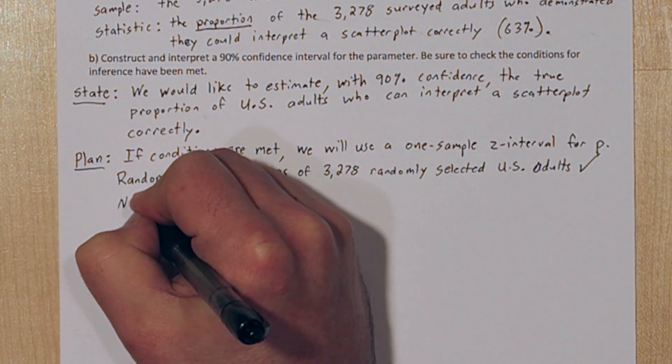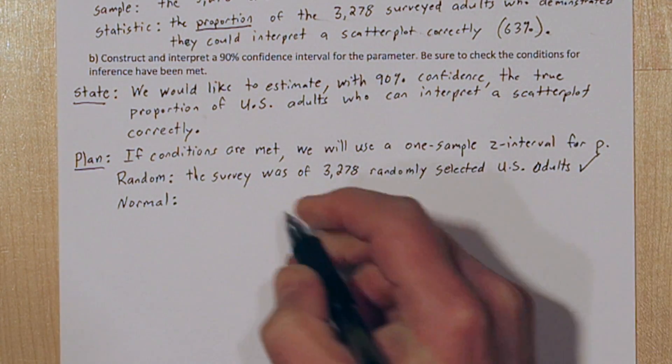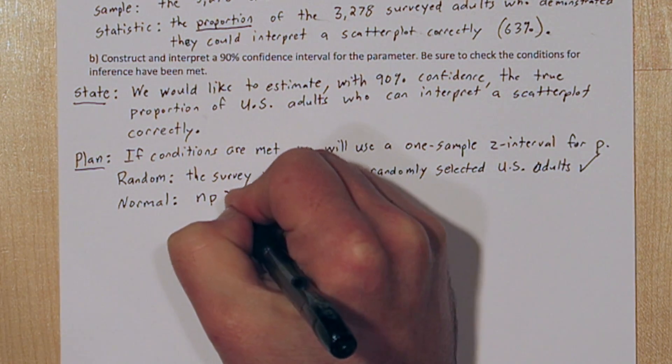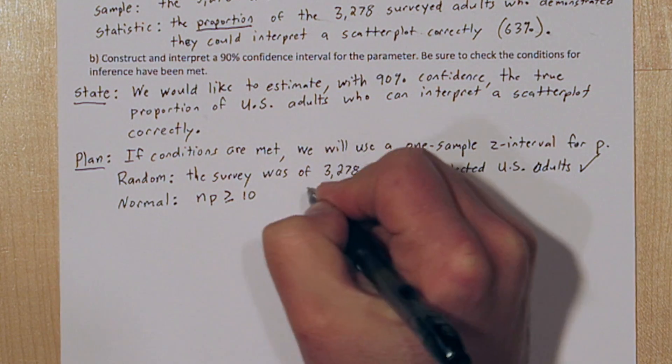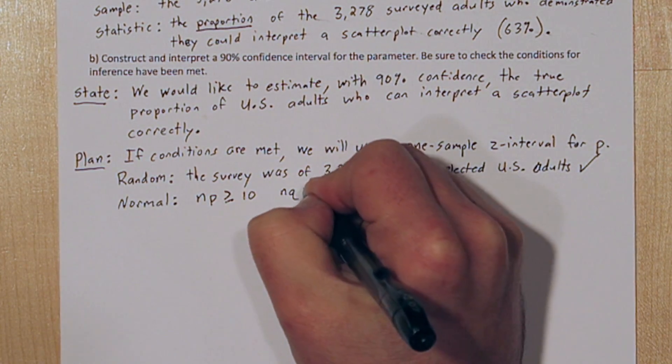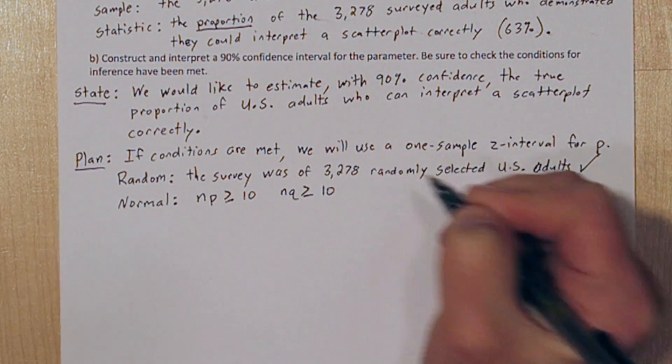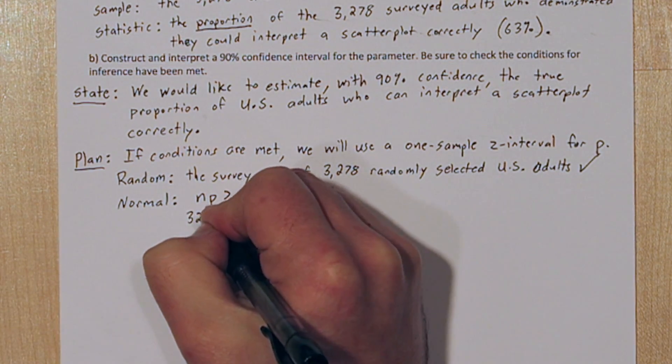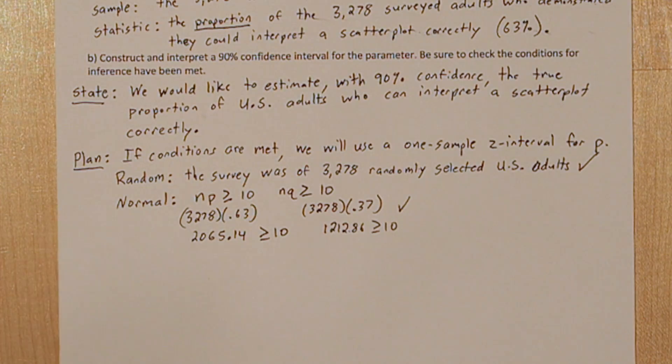Now we need to check the normal condition. We need to make sure that in our sample we have at least 10 adults who can interpret a scatter plot correctly. So that's NP needs to be greater than or equal to 10. And we need at least 10 adults who cannot interpret a scatter plot correctly. That's NQ needs to be greater than or equal to 10. Both of those check out. So the normal condition is met.